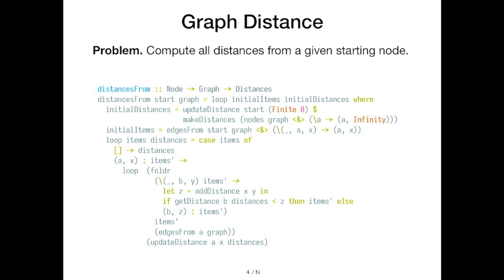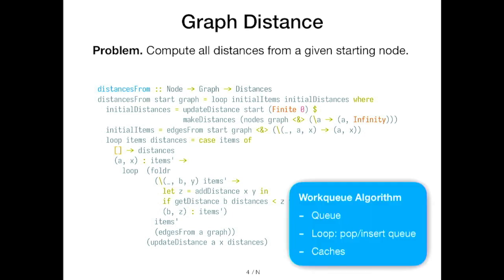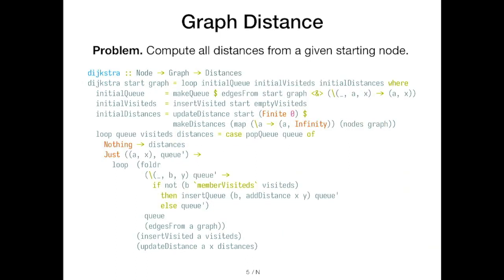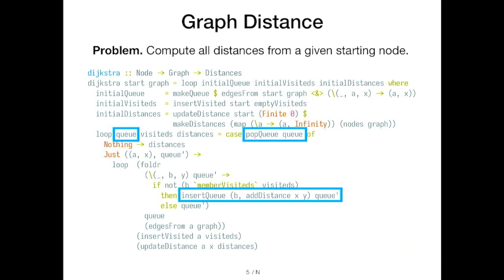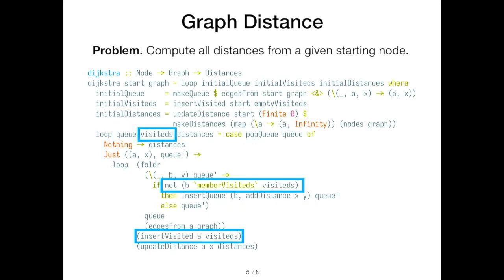This is a naive implementation — not very efficient because we might visit nodes multiple times. This is the general scheme of a work queue algorithm: we've got a queue, a loop that pops and inserts off that queue, and some caches encoding intermediary results. To make it more efficient, we could transform this implementation to something like Dijkstra's algorithm — using a priority queue ordering things by distance from the start, and a cache of visited nodes so we don't have to revisit nodes we've already seen.